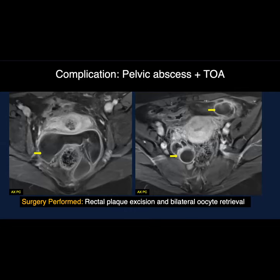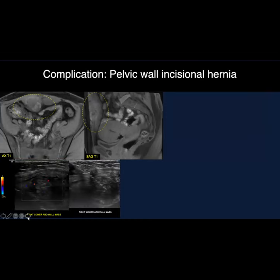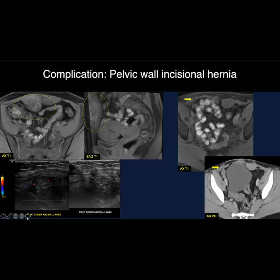Here are specific examples of complications. One is a posterior pelvic abscess in a patient who underwent rectal plaque excision. Following bilateral oocyte retrieval, another patient developed bilateral tubo-ovarian abscesses. Another patient had biopsy-proven scar endometriosis and underwent scar excision rather than cryoablation. On MRI you can see thinning of the anterior rectus muscle, which was excised along with the scar endometriosis. This patient developed an incisional hernia at the site of excision — presenting as a sizable bulge when standing.